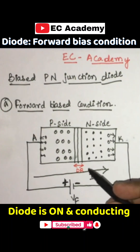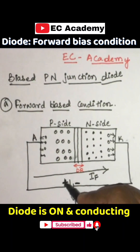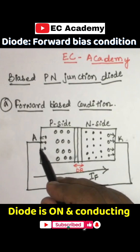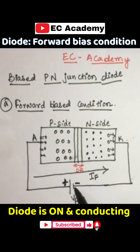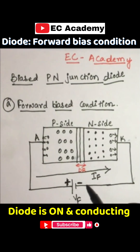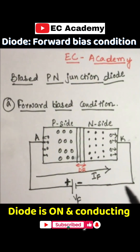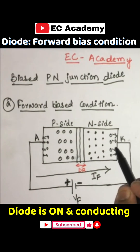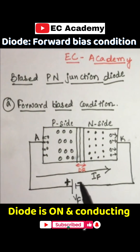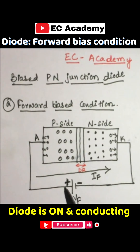The positive terminal of an external voltage source is connected to the P side of a diode, and the negative terminal of the external voltage source is connected to the N side of the diode. This condition is known as the forward bias condition of a P-N junction diode.